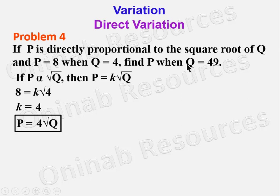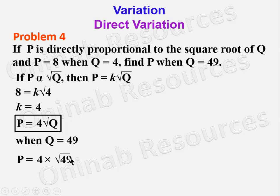We now find P when Q is 49. Substituting into the formula, P equals 4 times root 49. Root 49 is 7, and 7 times 4 gives 28. So P is equal to 28 when Q is 49. We are done with problem 4.